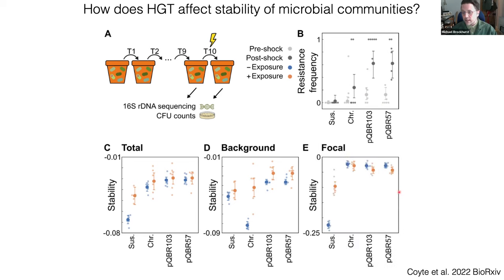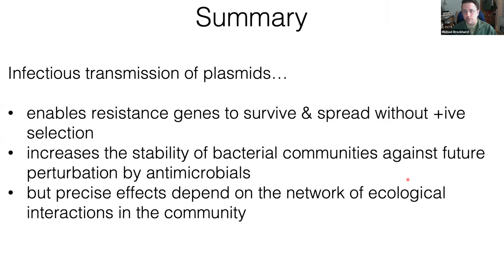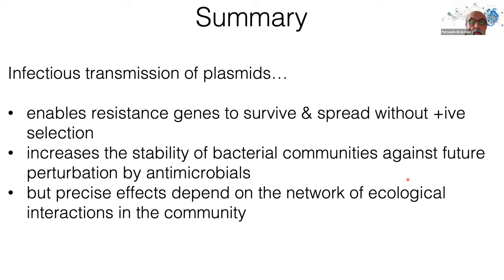A neat detail: for the focal species, giving away mobile resistance genes weakens focal species stability when you actually select for those genes before the perturbation. In summary: infectious transmission of plasmids is really important — it enables resistance genes to survive and spread without positive selection, it increases the stability of microbiomes against antimicrobial perturbations when encoding resistance genes, but the precise effects depend on the interplay between mobility and the network of interactions in the community.